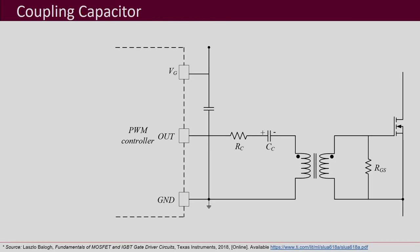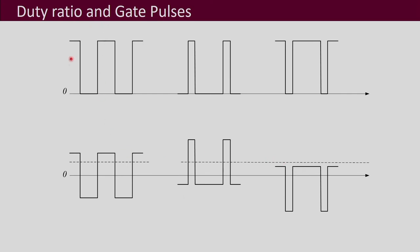The solution is to use a coupling capacitor. If we place a capacitor before the primary side of the transformer, only the AC component is passed — the capacitor will not allow DC to apply to the primary side. So the problem of DC going into the transformer is solved by this coupling capacitor.